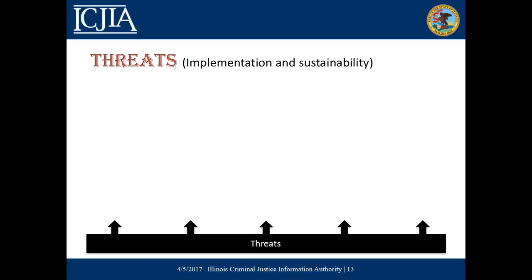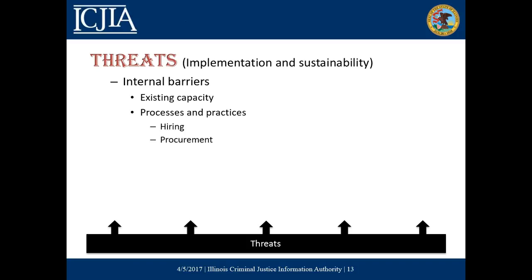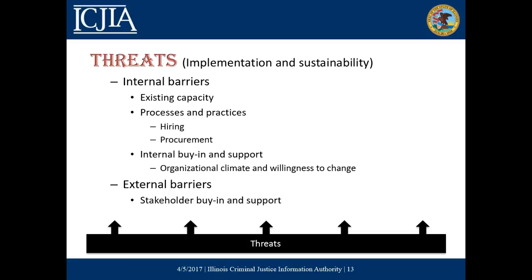As mentioned, some logic models include threats. Oftentimes these threats are to implementation and sustainability of the program. These might include internal barriers such as the existing capacity of the agency to implement the program successfully, processes and practices such as hiring and procurement factors that may impact your ability to bring in resources, and internal buy-in and support such as the organizational climate and the willingness of staff members to implement and change as necessary. Sometimes you also have external barriers, such as other stakeholder buy-in and support that are necessary for successful program implementation.